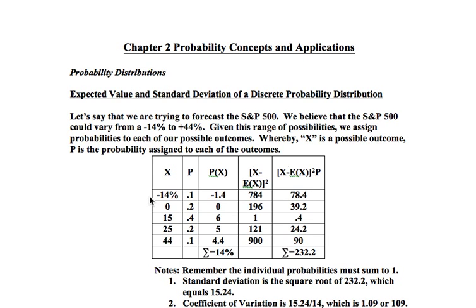One scenario is that the market is going to be down 14% — we assign a 10% probability. Next scenario: no change, 20% probability. 15% where the market may be, we assign a 40% probability. 25% with a 20% probability. 44% with a 10% probability. So with this scenario it's pretty easy to come up with the expected value.